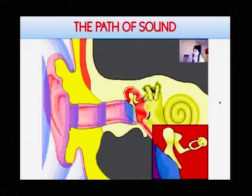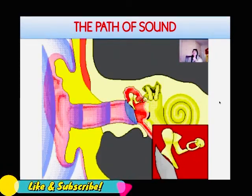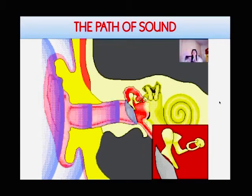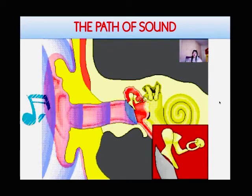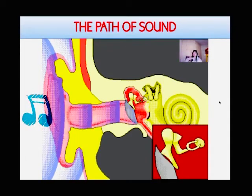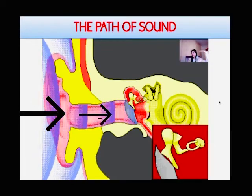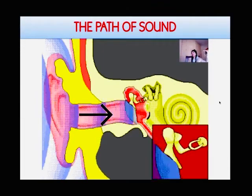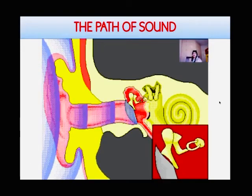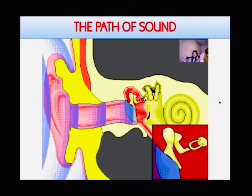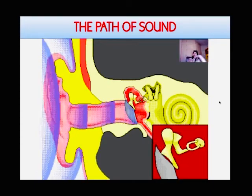Before we begin following the path of sound, I want you to understand that sound waves are moving from the vibrating source — for example, a person talking or a car that's driving past. These sound waves coming from the vibrating source are entering into our ear as horizontal waves. Humans are able to hear sound with a vibration frequency of between 16 and 20,000 Hertz. We must remember that.